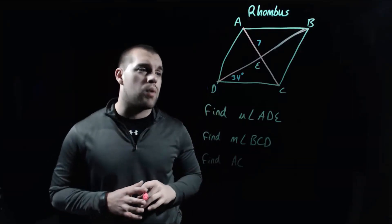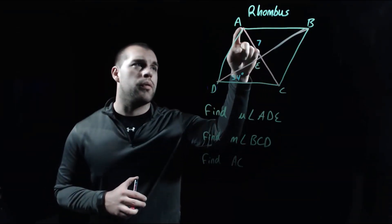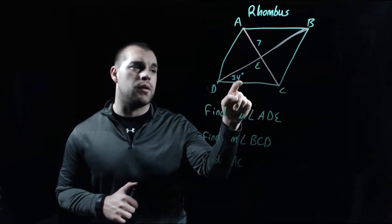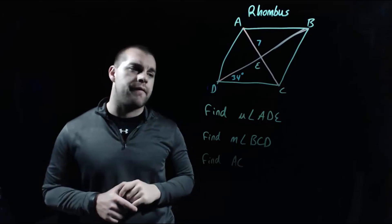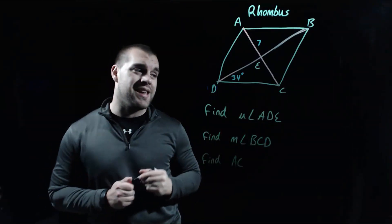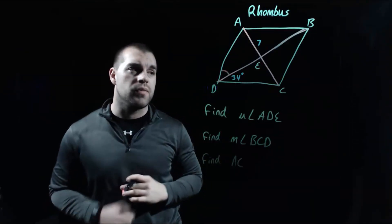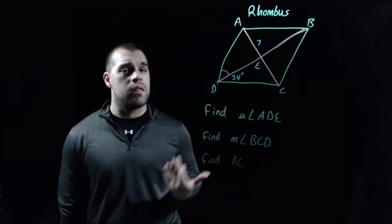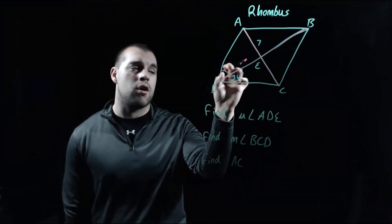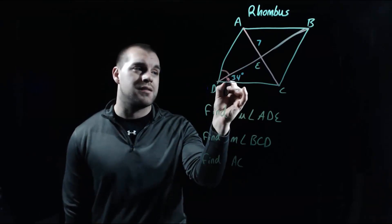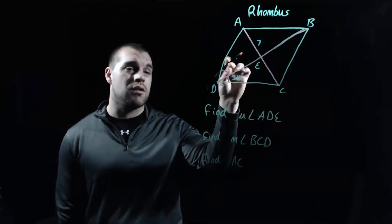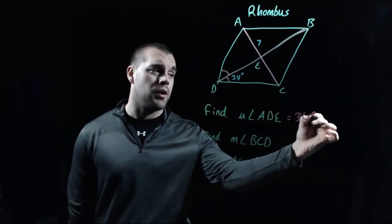In this example we're looking at a rhombus. We're given that the length from A to E is 7 and the measure of the angle at the bottom is 34 degrees, and there are three things I want to find. The first is the measure of angle ADE — that's this small angle over here. What we should remember is that one of the properties of a rhombus says that diagonals bisect angles. So this piece of the angle up here has to be exactly the same size as the piece below it. Since that's 34 degrees, our other angle also has to be 34 degrees.